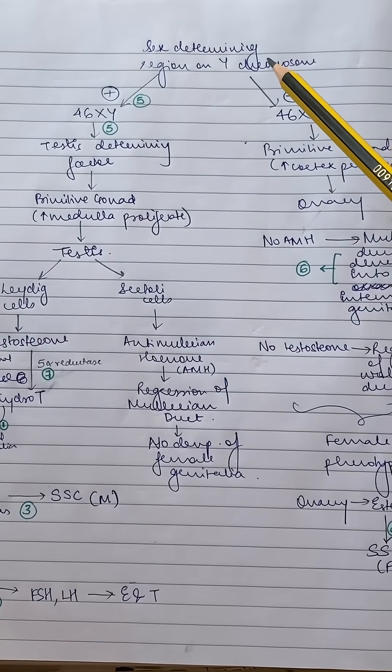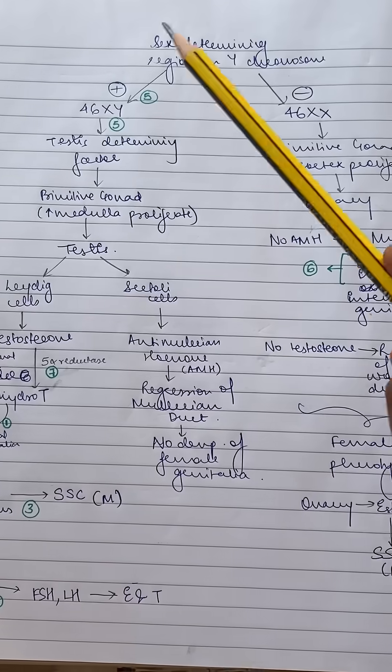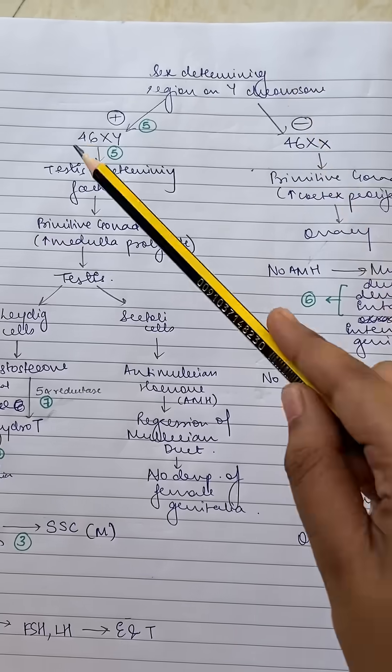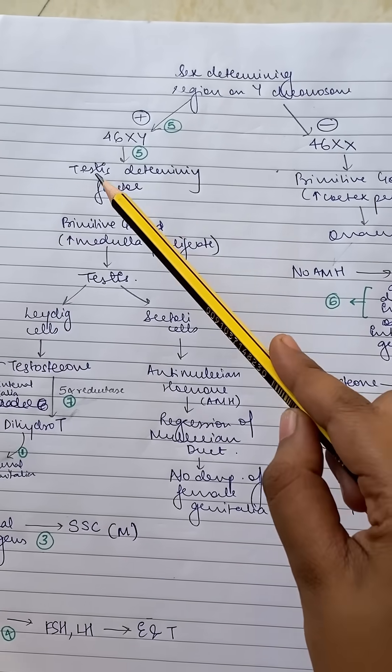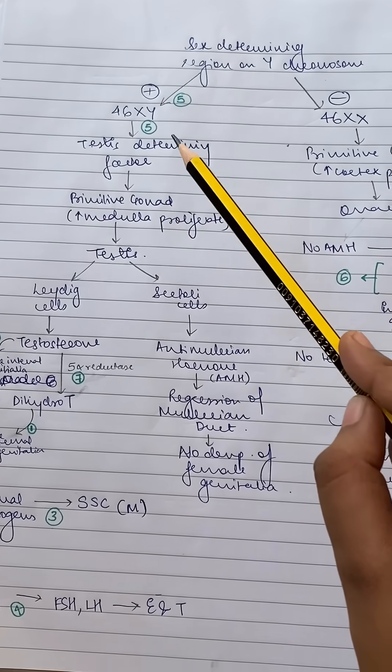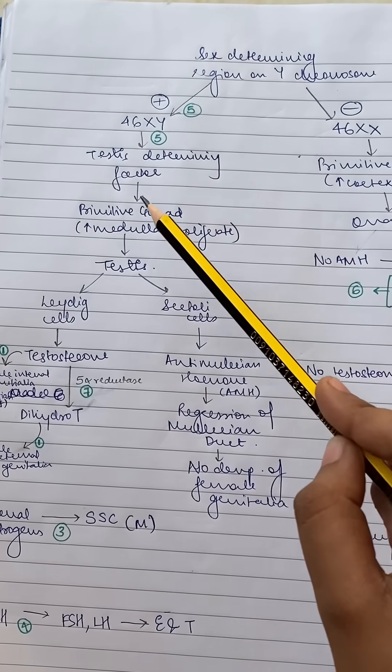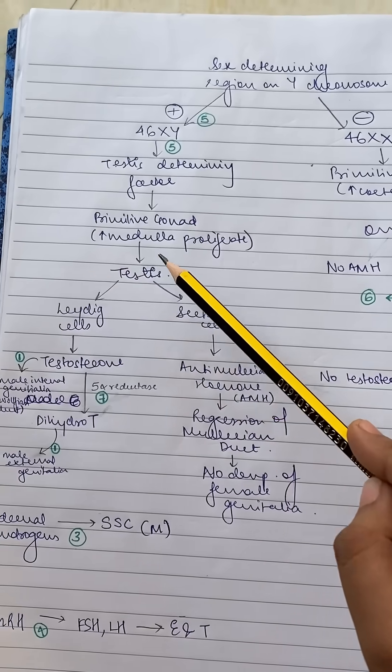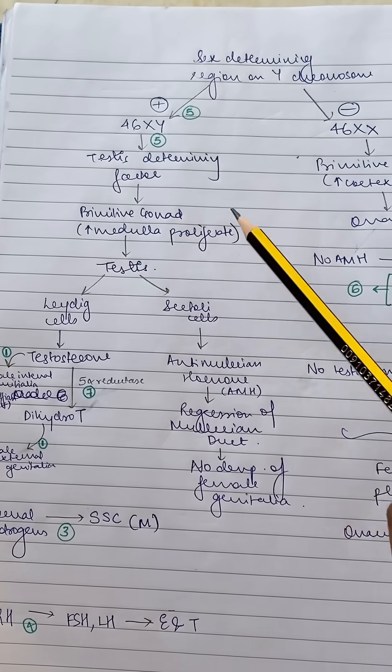So the SRY gene is present on the Y chromosome. So if you have a 46XY karyotype, then you have the SRY gene. It codes for the testis determining factor. So the testis determining factor makes the primitive gonad differentiate into testis by increasing the medullary proliferation.